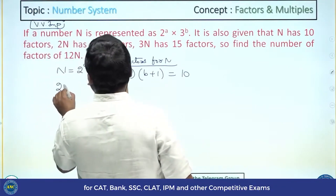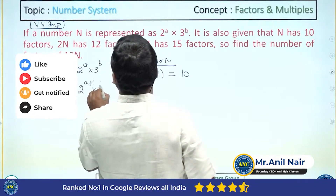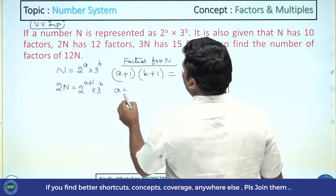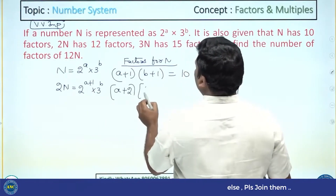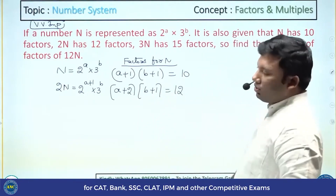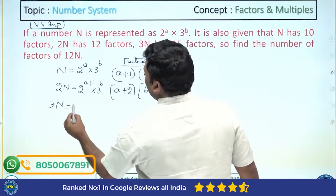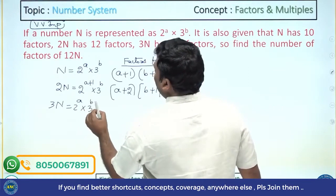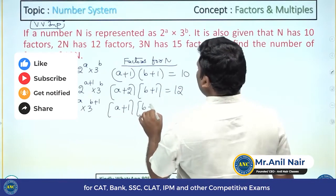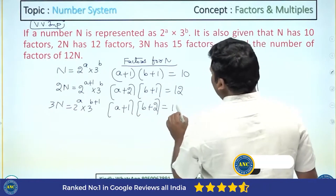2N will be 2 power (A+1) into 3 power B. The number of factors for 2N is (A+2)(B+1), which equals 12 factors. 3N will be 2 power A into 3 power (B+1). The number of factors for 3N is (A+1)(B+2), which equals 15 factors.